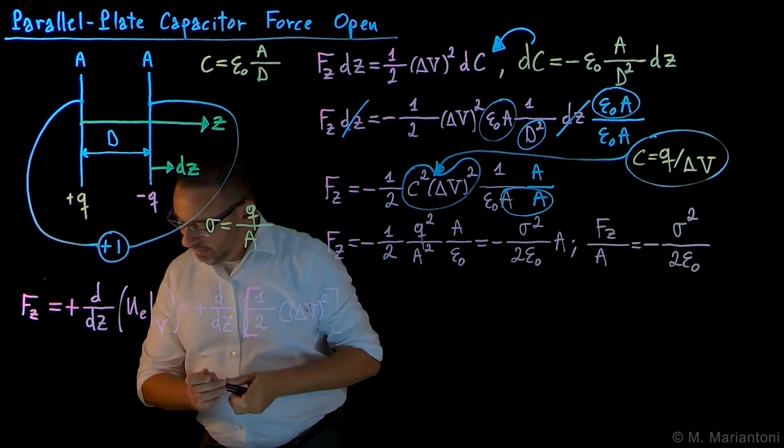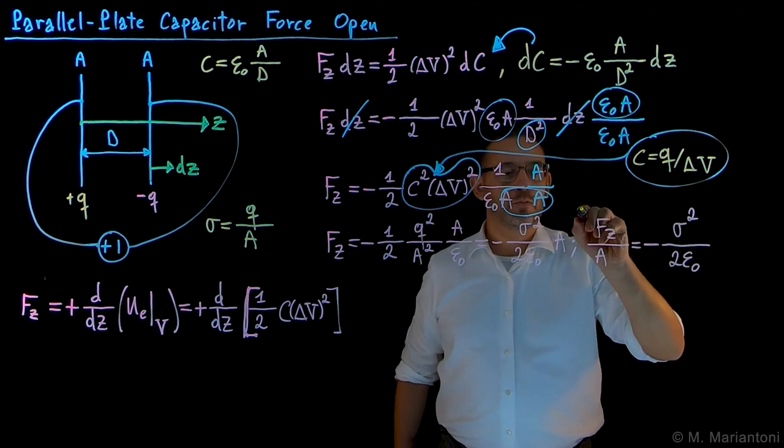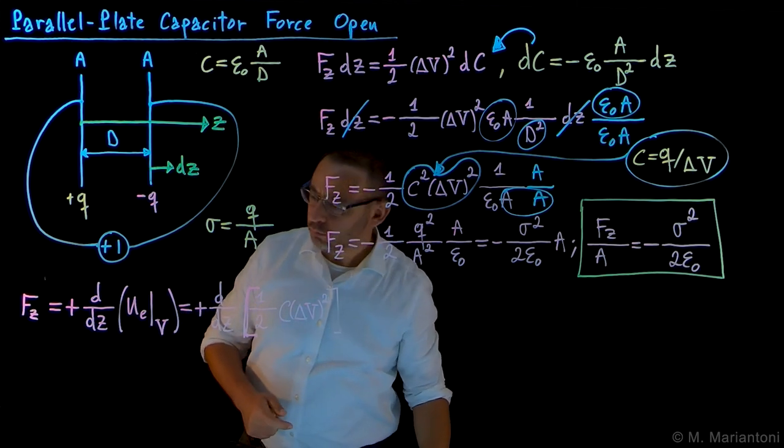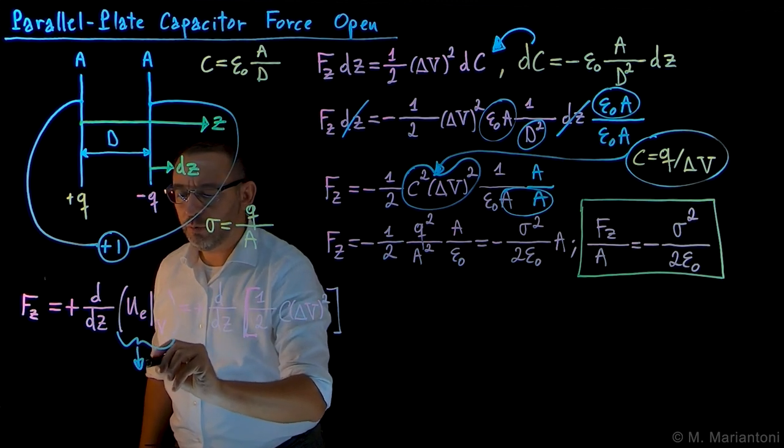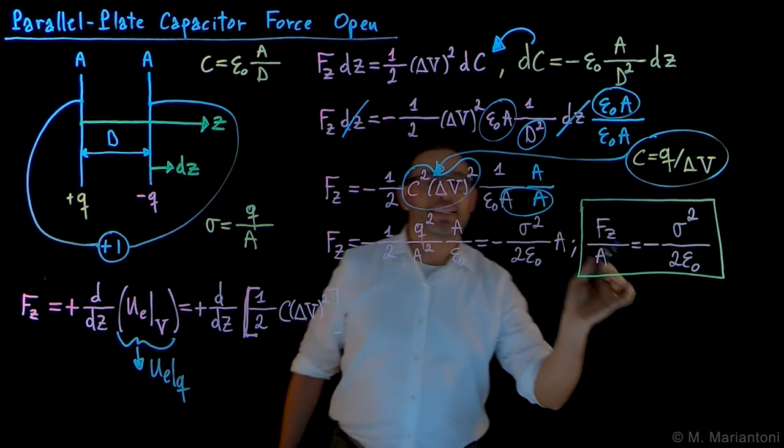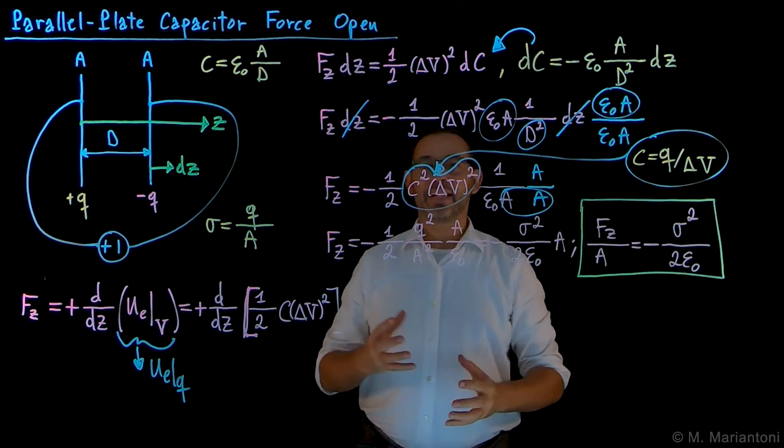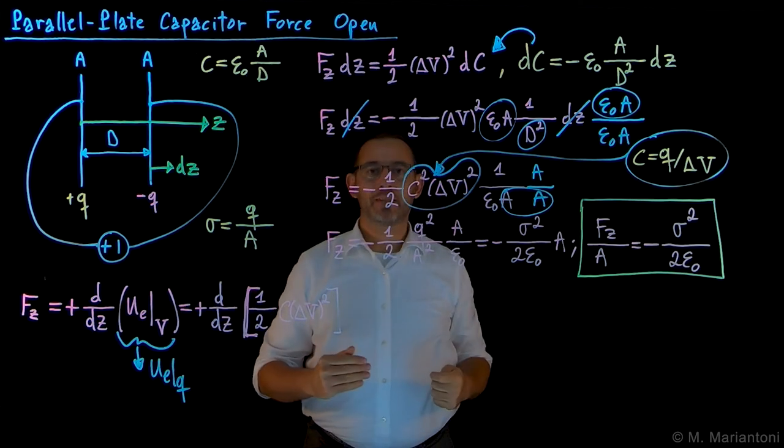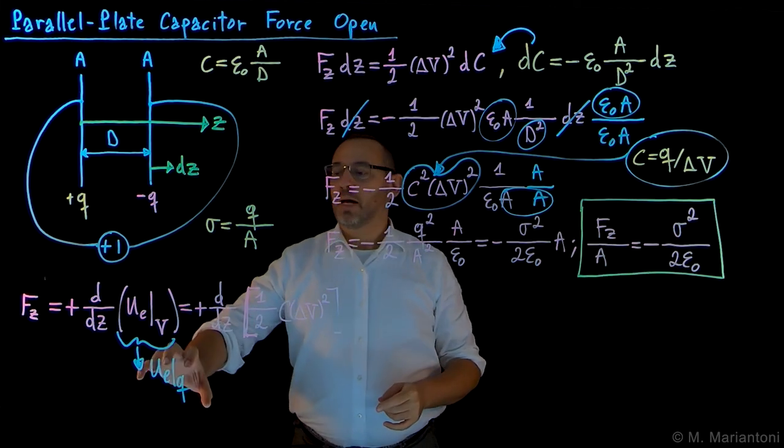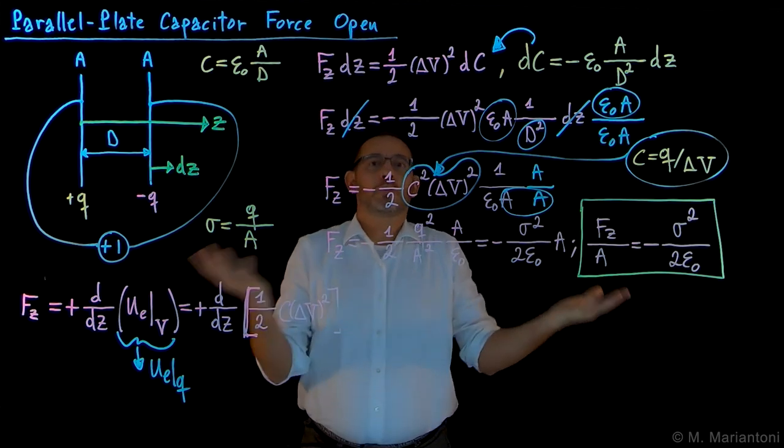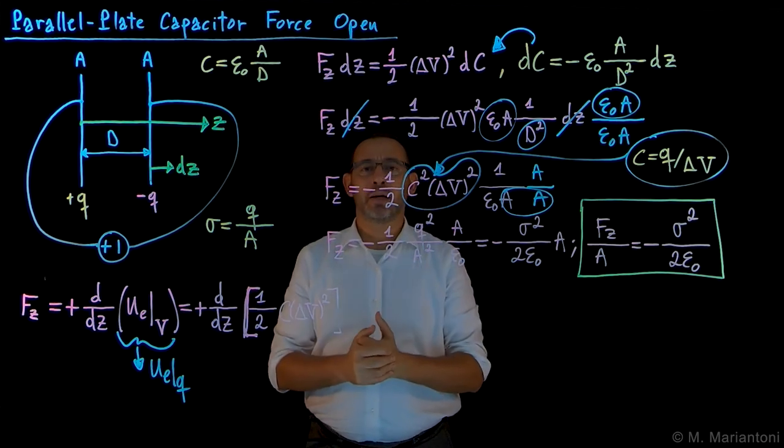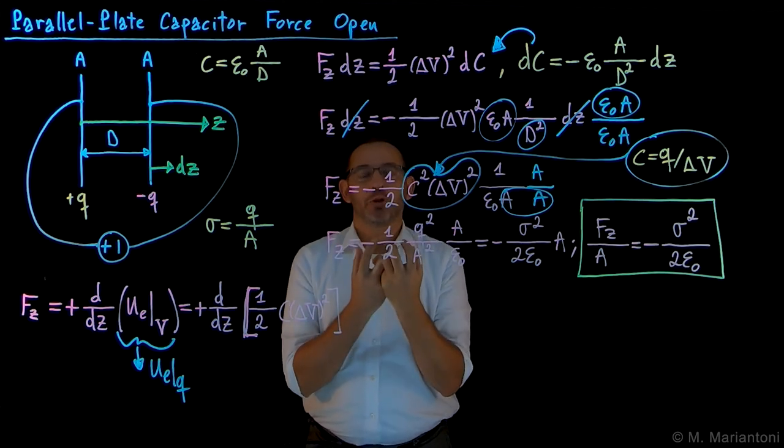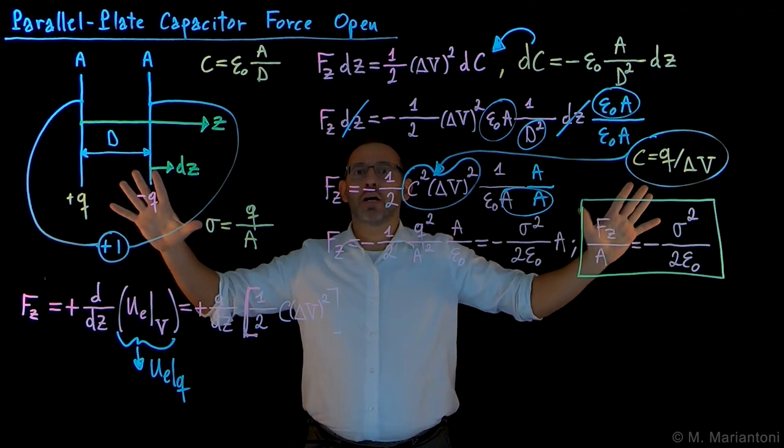We get minus sigma squared divided by two epsilon naught, which is exactly the same result we found in the previous video where we considered the system to be isolated. In that case we had u_E at Q. So in these two different cases, we get the same result, which is as expected. This very clearly shows the role of these canonical variables Q and V. If I use V as in this case, I'm considering effectively an open system and I get this result. If I consider Q, I'm considering an isolated system and I get the same result. It's not surprising that the force is the same, because it's the same force between the two plates.